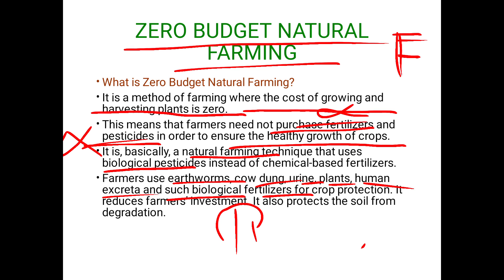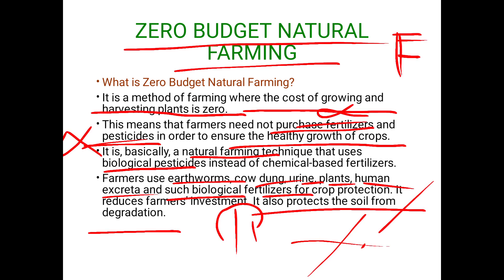A farmer who has a cow can use the cow's dung and urine as fertilizer and pesticide at no extra cost. These biological fertilizers also protect soil from degradation. Unlike chemical fertilizers — whose overuse eventually makes soil unfit for cultivation — biological inputs preserve soil fertility, ensuring the farmer does not lose his land.